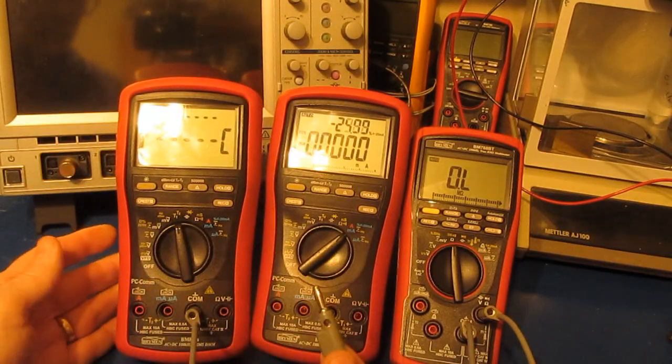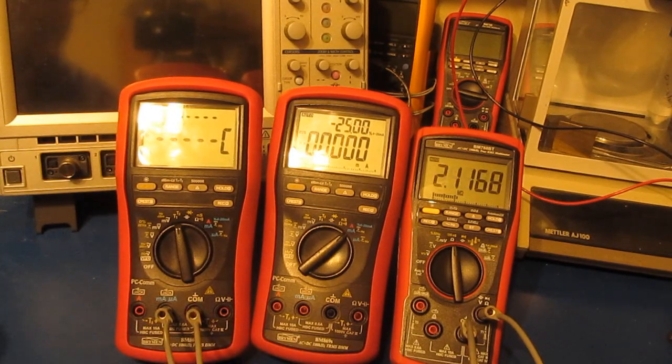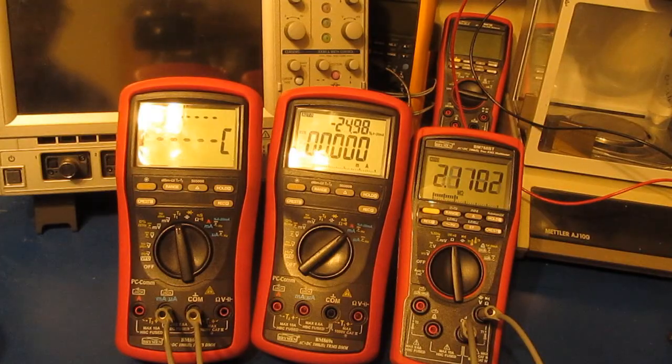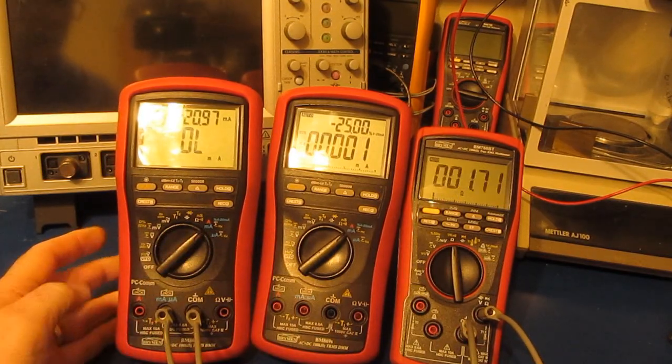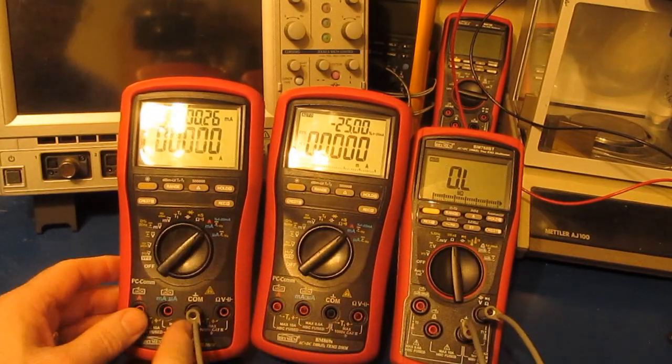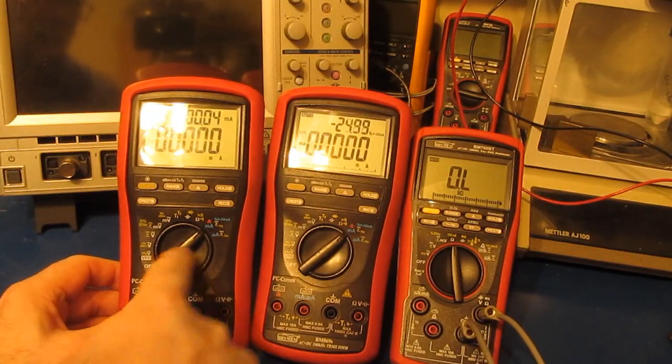is select the temperature input and measure the input resistance. You can see it measures, I don't know, 2.1 megohms or so. Again, let's go back to the milliamp setting and you can see it's reading back at 1.17 ohms. So what they've done is taken this low current input and passed it through